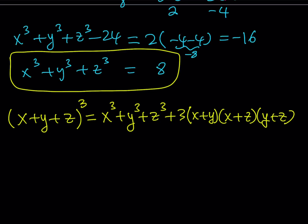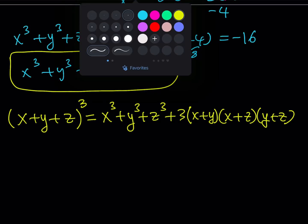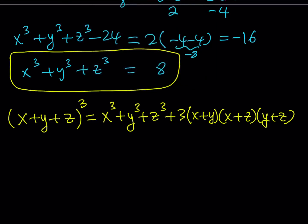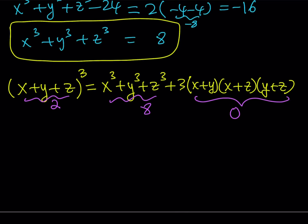You can prove this easily by expanding the left-hand side and then factoring the result. Notice that x cubed plus y cubed plus z cubed is equal to 8, and we also know that x plus y plus z is equal to 2. If you cube the 2, you're going to get 8. So you have 8 equals 8 plus something else, which means that the something else is equal to 0. This is the beautiful part — we do get a product of 0.